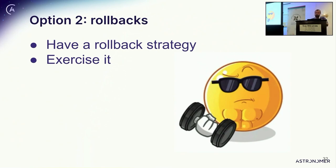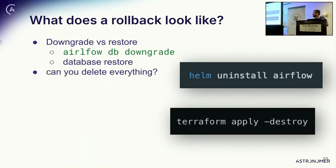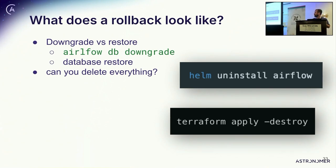In terms of the other option — rollbacks — you've got to have some kind of rollback strategy and you have to exercise it. A rollback or downgrade typically involves using our downgrade command and then doing a Helm deploy with the earlier version. If you're using Astronomer, we have a first-class rollback feature. There might be times when a downgrade is not possible, and in that case you want to be practiced in restoring from the backup you took before starting the upgrade process. Ideally you have some disaster recovery strategy where you could delete the whole Airflow release or destroy the entire Kubernetes cluster and stand it back up — as long as the Postgres instance is still there, your jobs are still running.